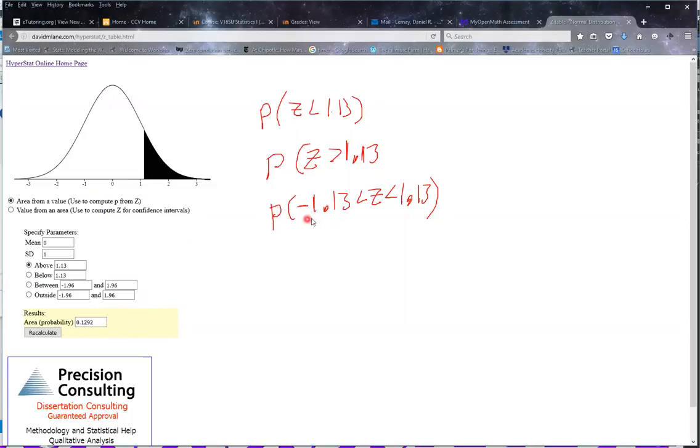Now suppose I want to go between negative 1.13 and positive 1.13. So then on the applet, I'm going to do between, and I'm going to make it negative 1.13 and positive 1.13, and it shades in between those two numbers, and that's the answer. Almost 75%.